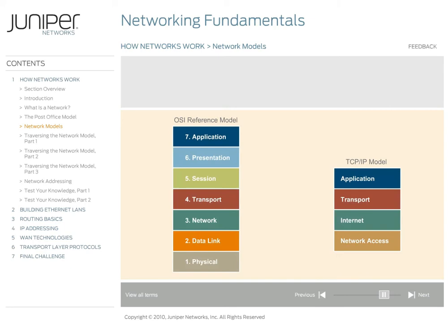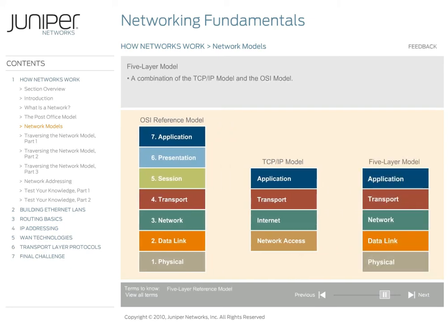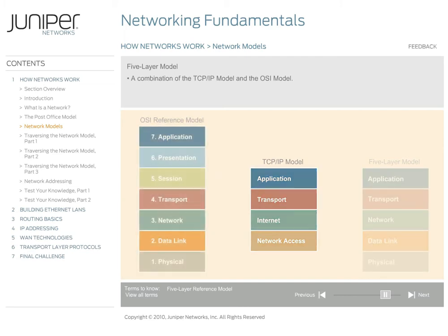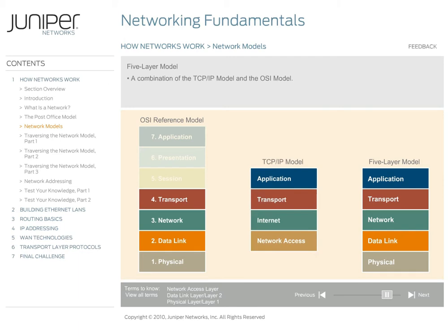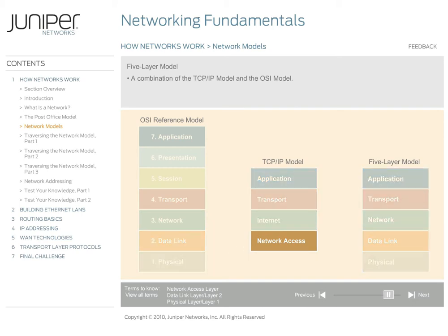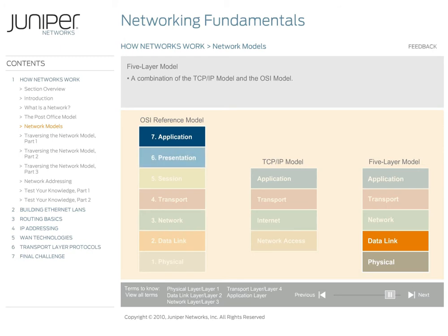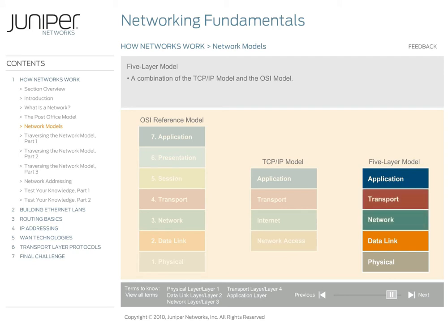In practice, however, many people discuss TCP/IP-based networks using a five-layer model that is a combination of the four-layer TCP/IP model and the seven-layer OSI model. This commonly used networking model uses the first four layers of the OSI reference model. Where the TCP/IP model combined the OSI data link layer and the physical layer into a single network access layer, this model breaks them back out. At the same time, like the TCP/IP model, this model collapses the OSI model's application, presentation, and session layers into one layer, referred to as the application layer. Although there are only five layers in this model, the layers are commonly referred to using the original OSI numbering scheme — layers one through four are the lower layers, and layer seven is the application layer. This course uses this commonly used hybrid networking model.